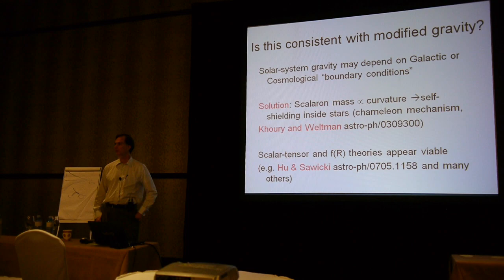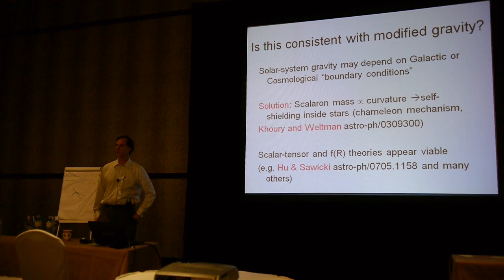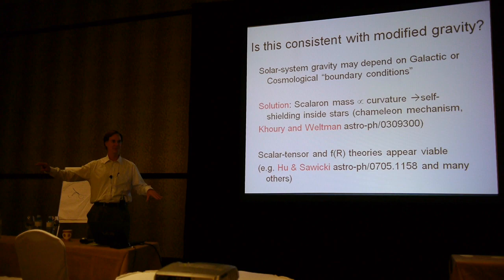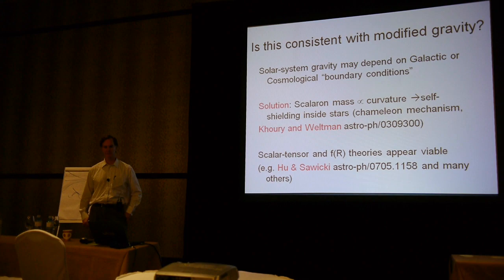Is this approach compatible with modified gravity? An obvious question is: if tests of gravitation are so strong in the solar system, is there any room for modified gravity? One can appeal to theoretical ignorance and suppose that the solar system and the universe are distinct, but that's not satisfactory. One would like consistent gravitational theories that extend from solar system to cosmic scales, and that turns out not to be entirely trivial.